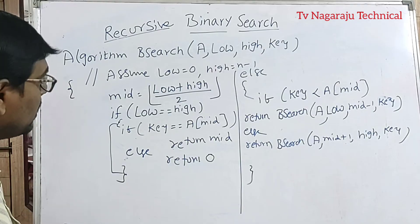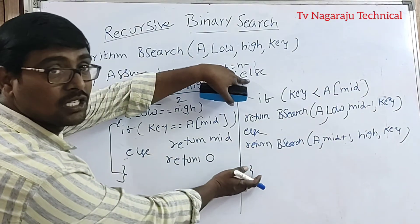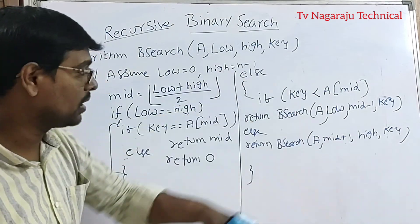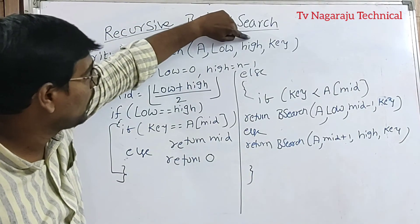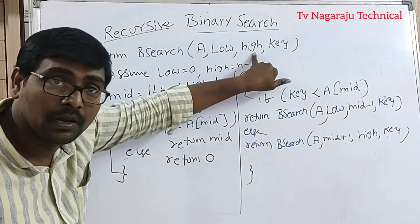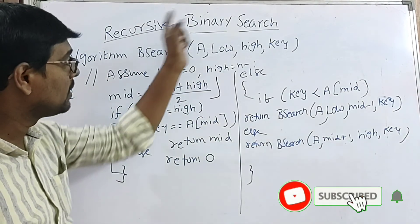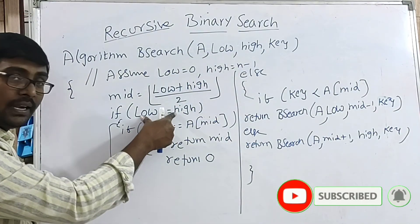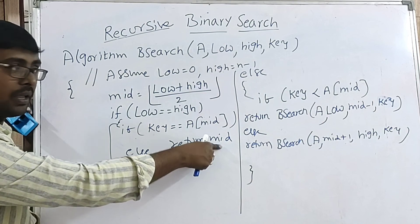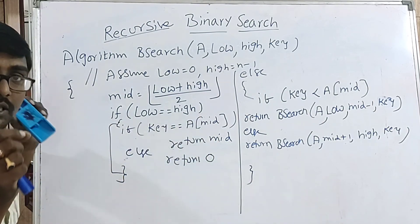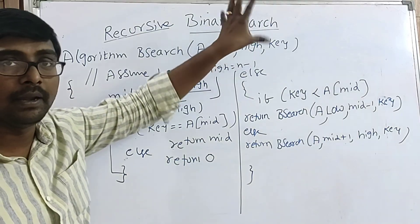Now understand the algorithm. The mid value is calculated first. This is the base condition and these are the recursive conditions. Whenever the function is called again, low is 0 and high is updated, for example, to mid minus 1. Based on this, they calculate the new mid value and perform the same operation. This is repeated until the list contains a single element. Once a single element remains, we compare it — if equal, return the index; if not, return 0, meaning the element is not available. This is the non-recursive and recursive approach for implementing binary search. Thank you very much.